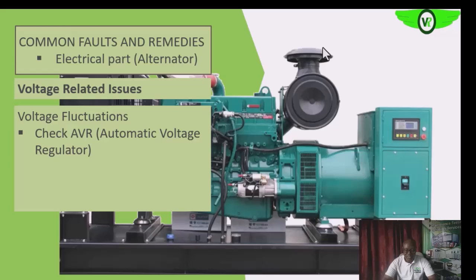If the AVR is delivering inconsistent current to the exciter field, it means the field will be producing and decaying, causing fluctuation of the magnetic field in the main field. That will eventually cause fluctuation of what is induced into the main armature. Also check the diode rectifier plate — if it is shorted, instead of rectifying it will deliver AC voltage to the main field, causing voltage fluctuation.